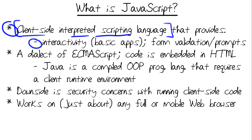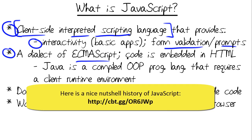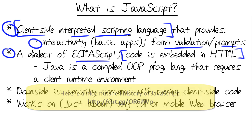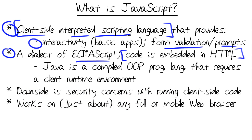JavaScript gives us basic interactivity. In particular, you'll find JavaScript used for form validation — if you miss a field in a form and you get a prompt, chances are that prompt is JavaScript. Technically, JavaScript is a dialect or sub-form of ECMAScript. You can learn more about that online, but the key point to remember is that JavaScript is client-side and the code is embedded in its source HTML code.